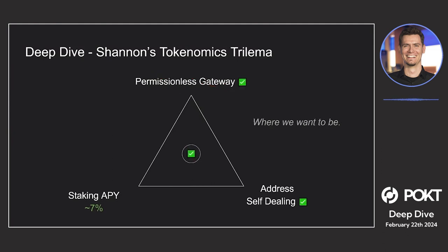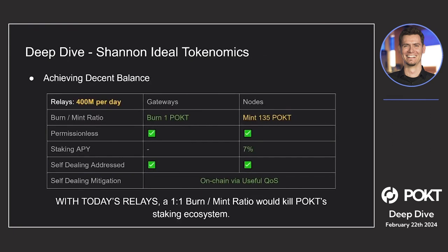We believe there is a solution that can address all three of these issues simultaneously, allowing us to transition from Morse to Shannon without needing 25 billion relays a day. It would achieve a decent balance with 400 million relays a day — the burn-to-mint ratio is still high because we want high staking APY — but we can still have permissionless gateways and nodes, and self-dealing is addressed on-chain via what I'm calling useful QoS.